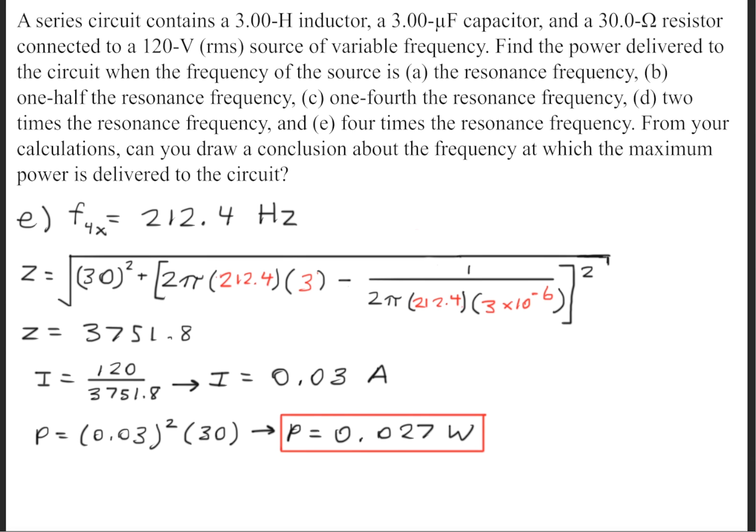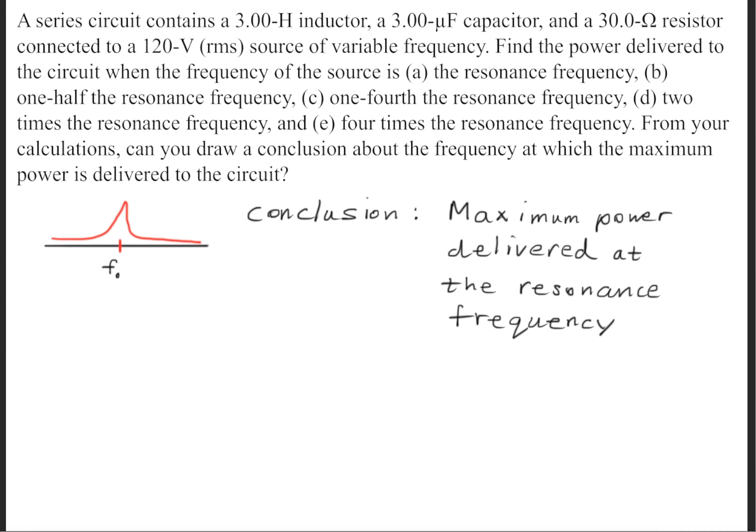Part E is asking when you have four times the resonance frequency. So once again, you'll take the resonance frequency and multiply it by four to get 212.4 Hertz. You'll go ahead and plug that into the impedance formula, then find the current, and find that you'll have a power of about 0.027 Watts.